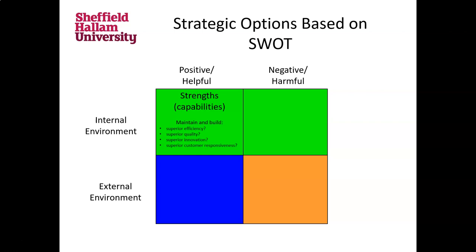The things that are positive or helpful derived from the internal environment are strengths, capabilities, or competencies. Strategic options based on strengths are: how do we maintain and exploit them, and how do we build and get better at this? Because the competitive landscape might not stand still — you can't rest on your laurels. You've got to think: how could we become more efficient, improve quality, innovate better, improve customer responsiveness? Those are the four building blocks of competitive advantage that Hill and Jones talk about in their strategic management textbook.